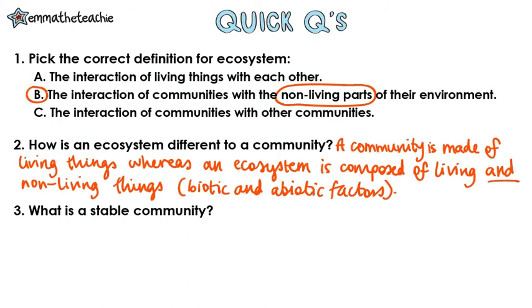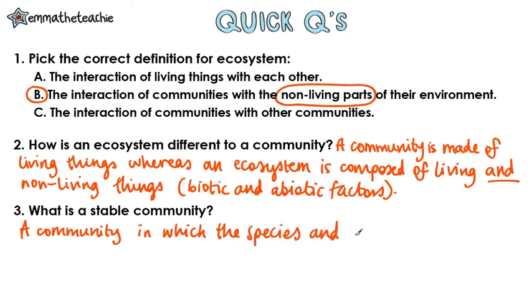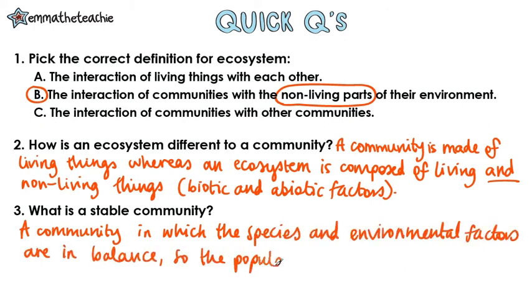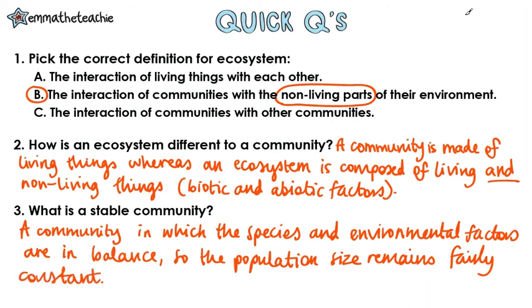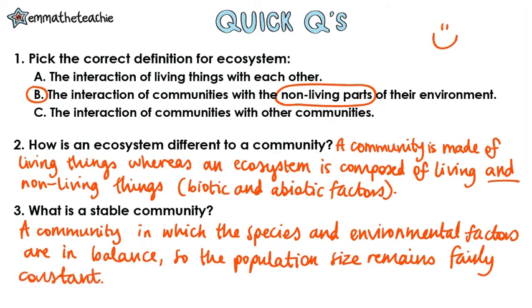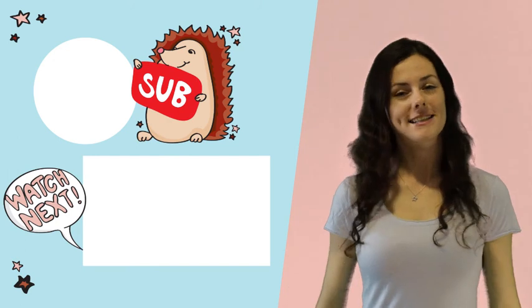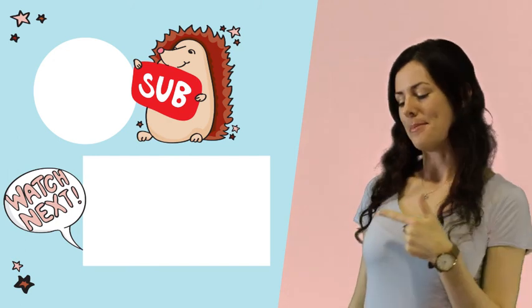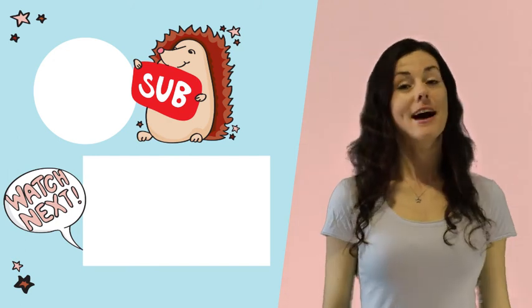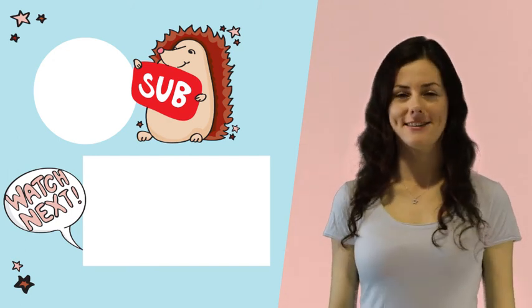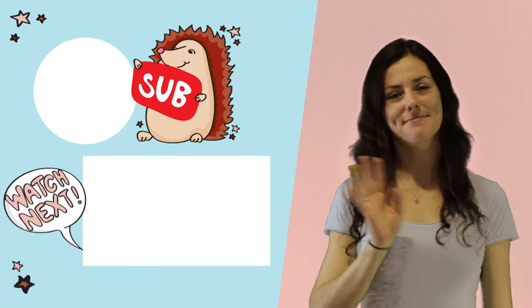And three, what is a stable community? This is a community in which the species and environmental factors are in balance so that the population size remains fairly constant. How did you do? Learn about the factors affecting communities in my next video and please subscribe for more science videos. Thanks and bye!